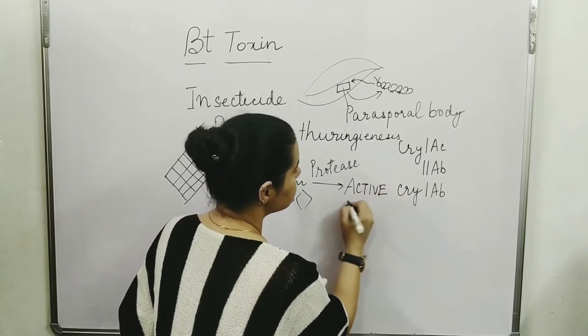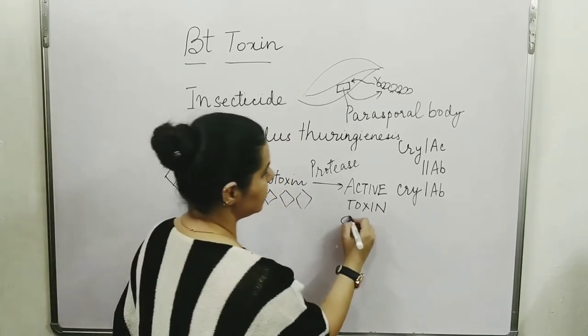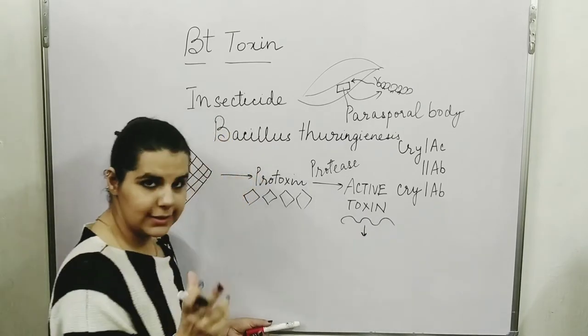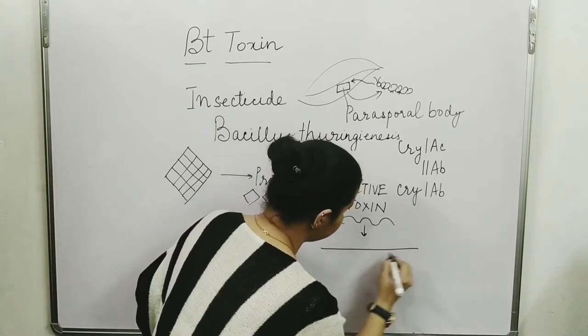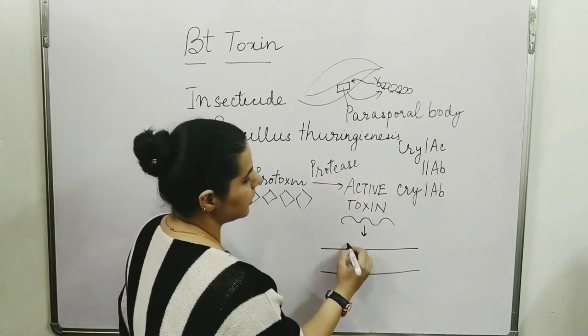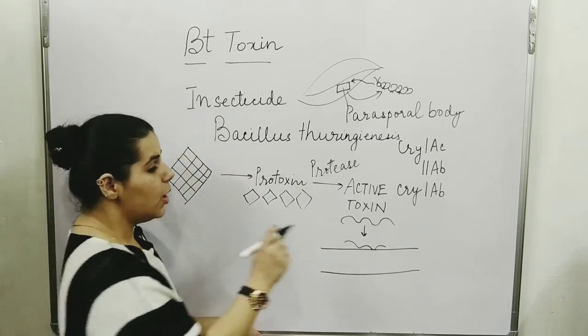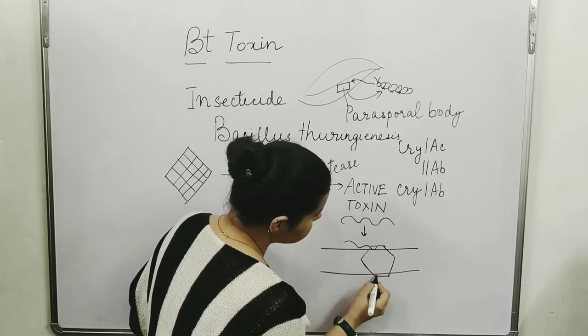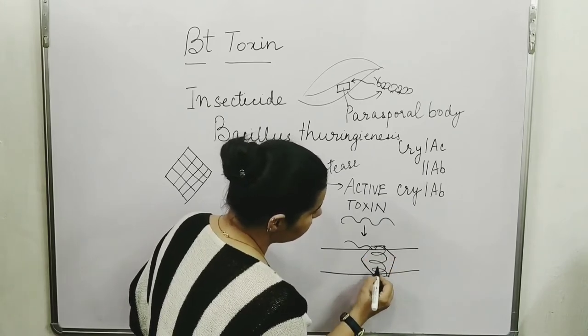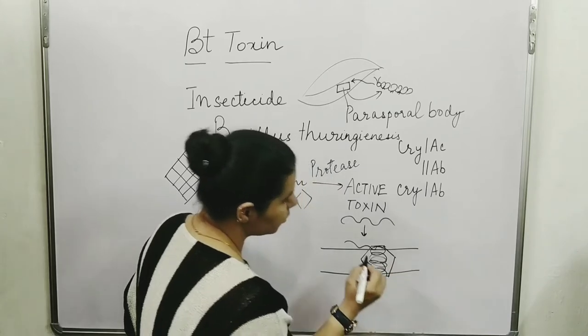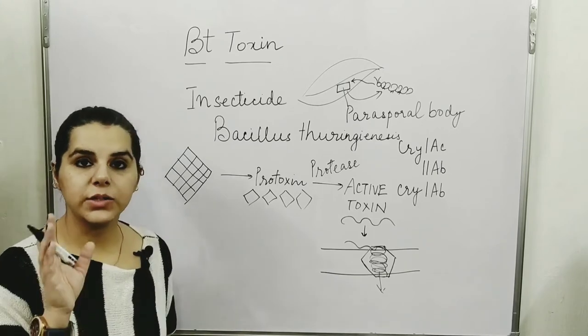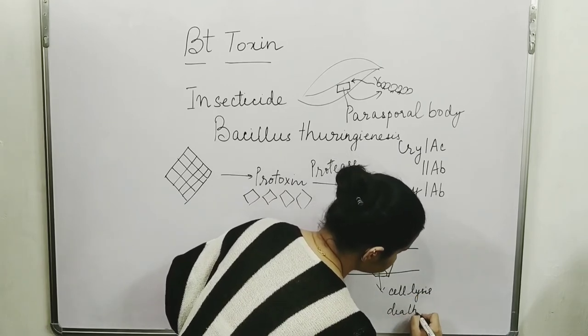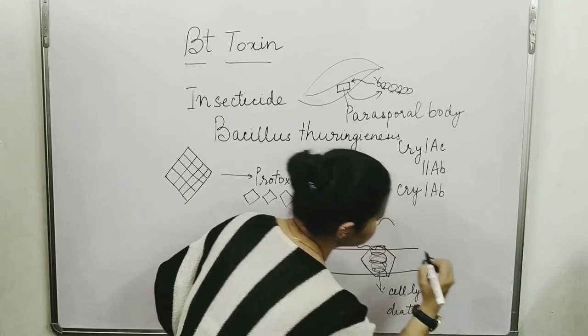This active toxin integrates into the epithelial lining, the epithelial cells. The epithelial cells create a hexagonal pore, which allows water and ions in, causing osmotic lysis. And due to this osmotic lysis, there is cell death.